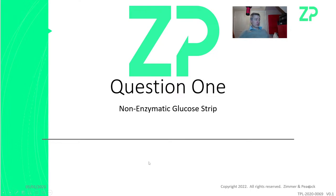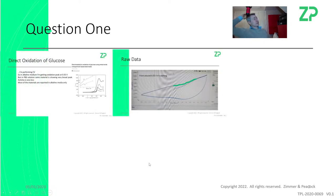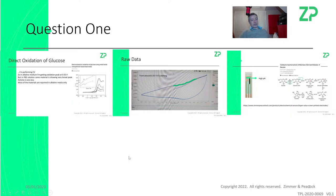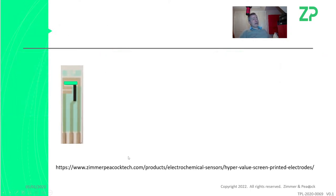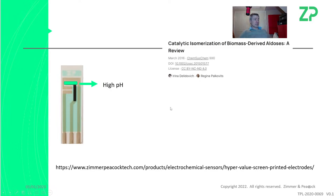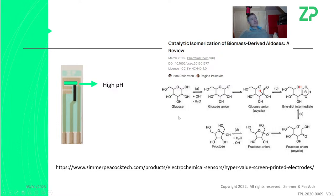Question one: non-enzymatic glucose strip. Last week somebody was trying to develop one. I looked at their data and put slides out. What you should be doing is taking a carbon screen-printed electrode and functionalizing it with the metal oxide. Most research is done at high pH not because it activates the metal oxide, but because in order to oxidize glucose directly — without the enzymatic route — you essentially deprotonate the glucose using alkali. The anion of glucose is then easier to detect.